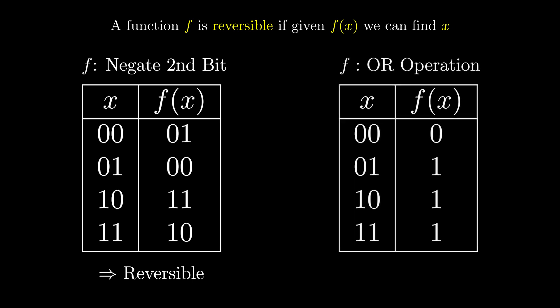But the OR operation, on the other hand, is not reversible. Since if we get an output of 1, we cannot say what the input was. It could have been any of these three inputs.